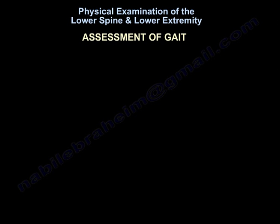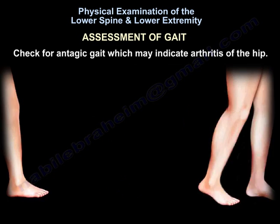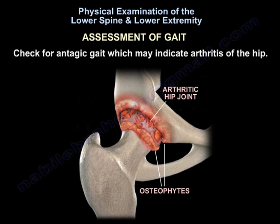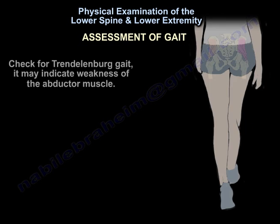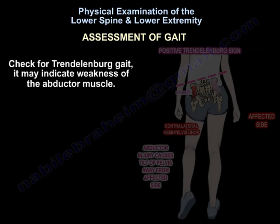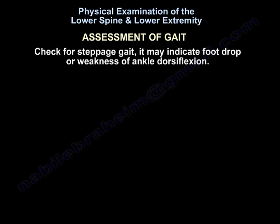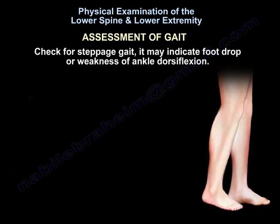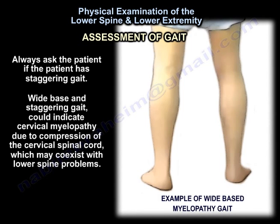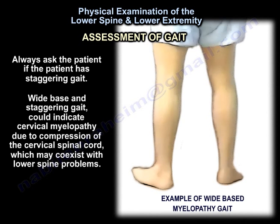Then assessment of gait. Check for antalgic gait, which may indicate an arthritis of the hip. Check for Trendelenburg gait, which may indicate weakness of the abductor muscles. Check for steppage gait, which may indicate foot drop or weakness of ankle dorsiflexion. Always ask the patient about staggering gait — wide base and staggering gait could indicate cervical myelopathy due to compression of the cervical spinal cord, which may coexist with lower spine problems.